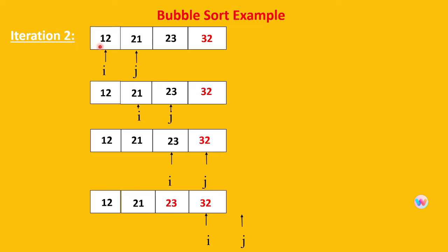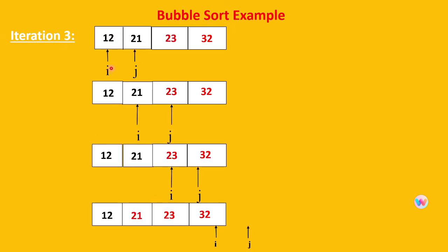In iteration 2, again start with i at position 0 and j at position 1. Compare i and j: is j less than i? No, so keep it as is and increment i and j. Now i points at 1 and j at 2. Again compare: is j less than i? No, keep it as is. The last element is already sorted so no need to compare further. At the end of iteration 2, the second-largest element 23 also gets its place. So now two elements — 23 and 32 — are sorted.